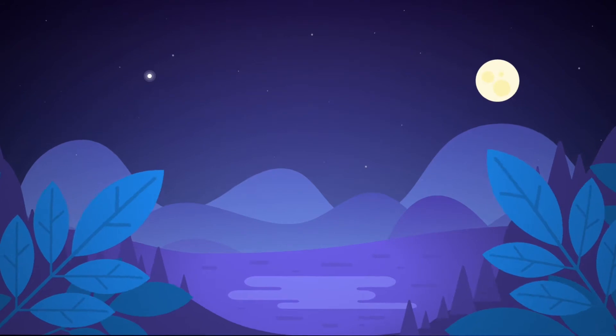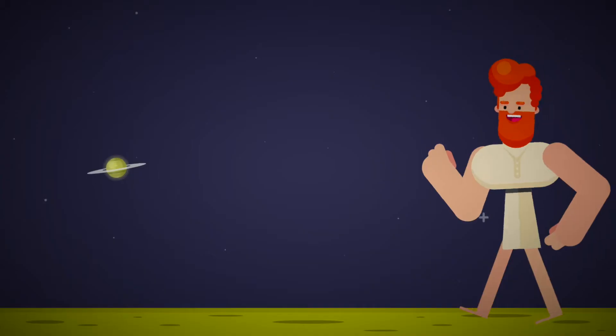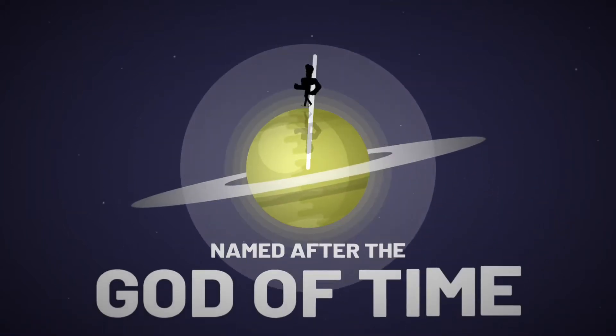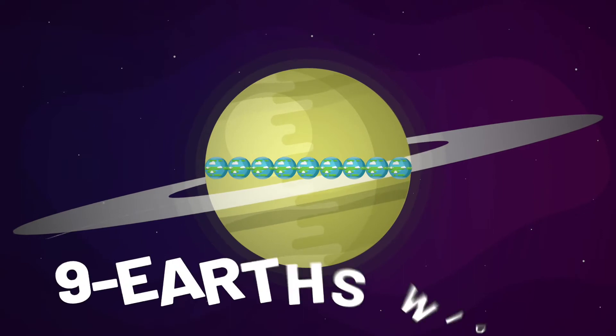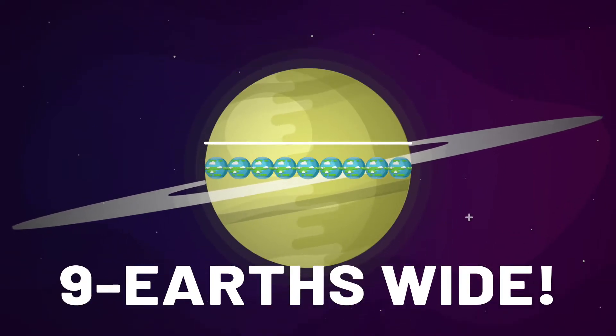Saturn was the most distant planet visible before telescopes, and having by far the slowest orbit of any planet, they named it after the ancient Roman god of time. As the second largest planet in our solar system, Saturn is a true giant. It's nine times the width of Earth.